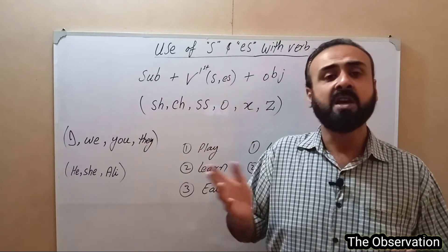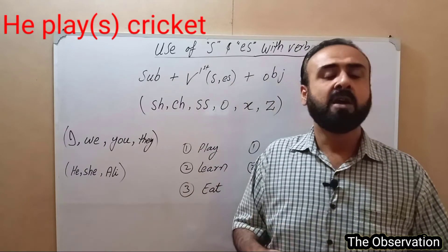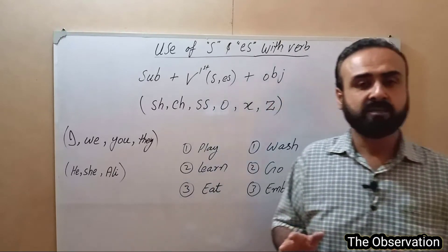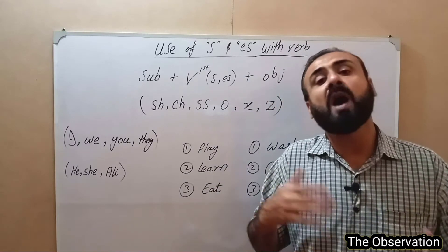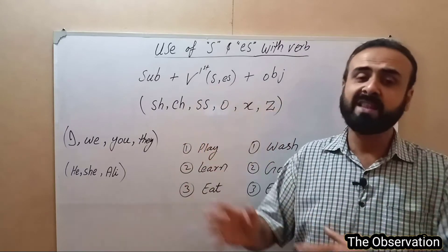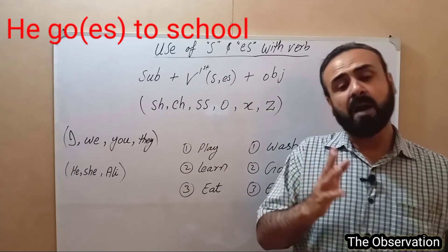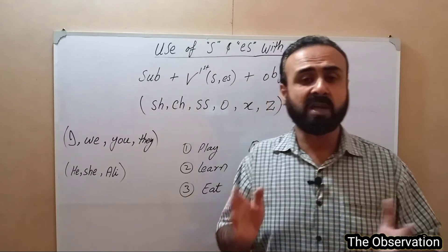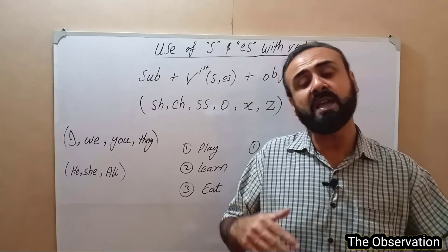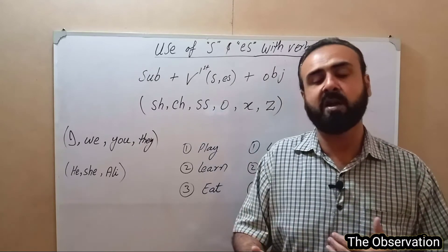For example, I play cricket, but when we say he, it becomes he plays cricket — so S is added to the verb. Similarly, if I go to school, it becomes he goes to school — here ES is added. The addition of S or ES depends on the verb ending, which I will explain.